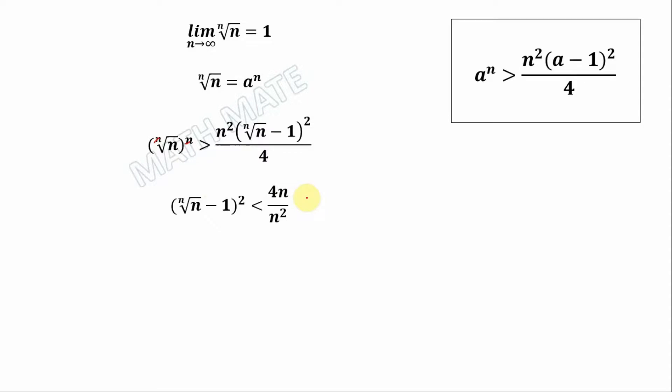Here we can cancel n with this one, and let's put a square root of both sides.